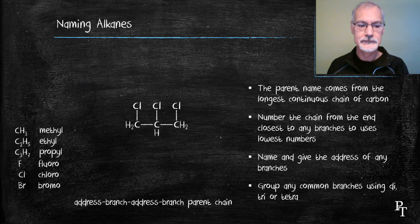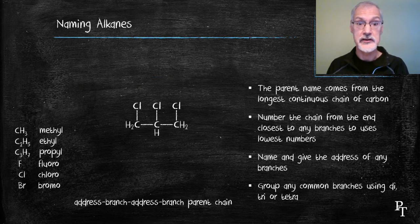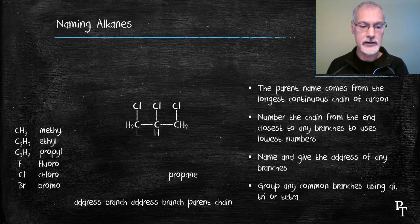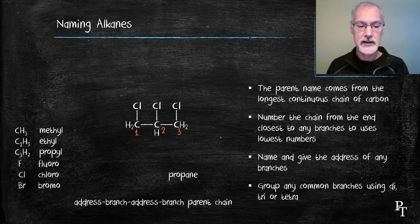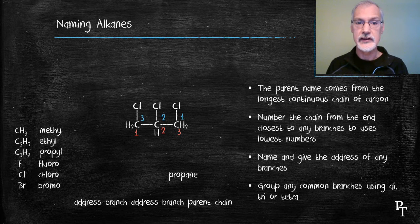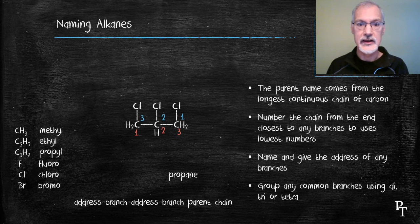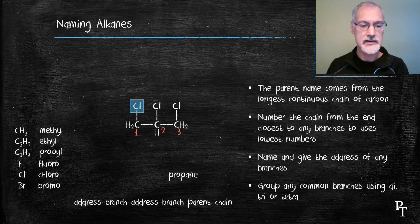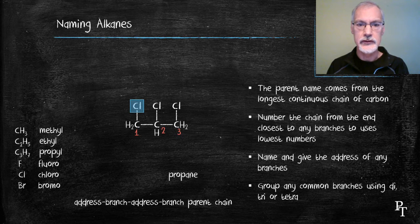Let's try another one. First thing I notice is a three carbon chain here, so it's going to be called something propane. And I can number it from either end, it doesn't matter. I'll get the same side groups located at the same locations. So we'll do it with the red numbers.